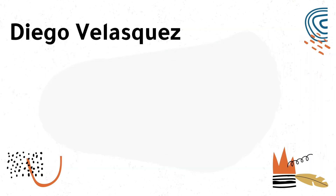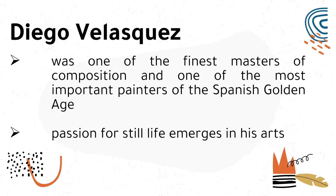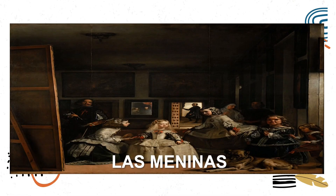The next artist during this period is Diego Velazquez, one of the finest masters of composition and one of the most important painters of the Spanish Golden Age. He painted still life frequently. His famous artworks include The Surrender of Breda, which depicts a military victory, and Las Meninas, which simply means 'maids of honor.' Las Meninas shows Infanta Margarita at the center with her servants around her, along with a couple of dwarves, two adult figures, and a dog lying down at the forefront.